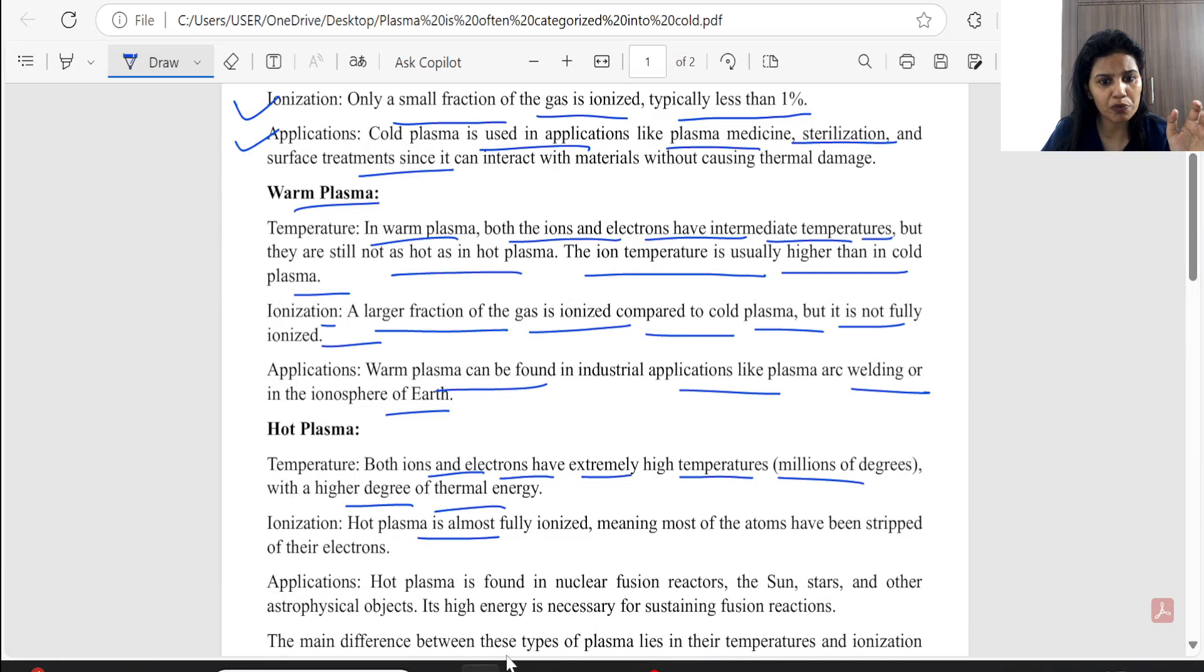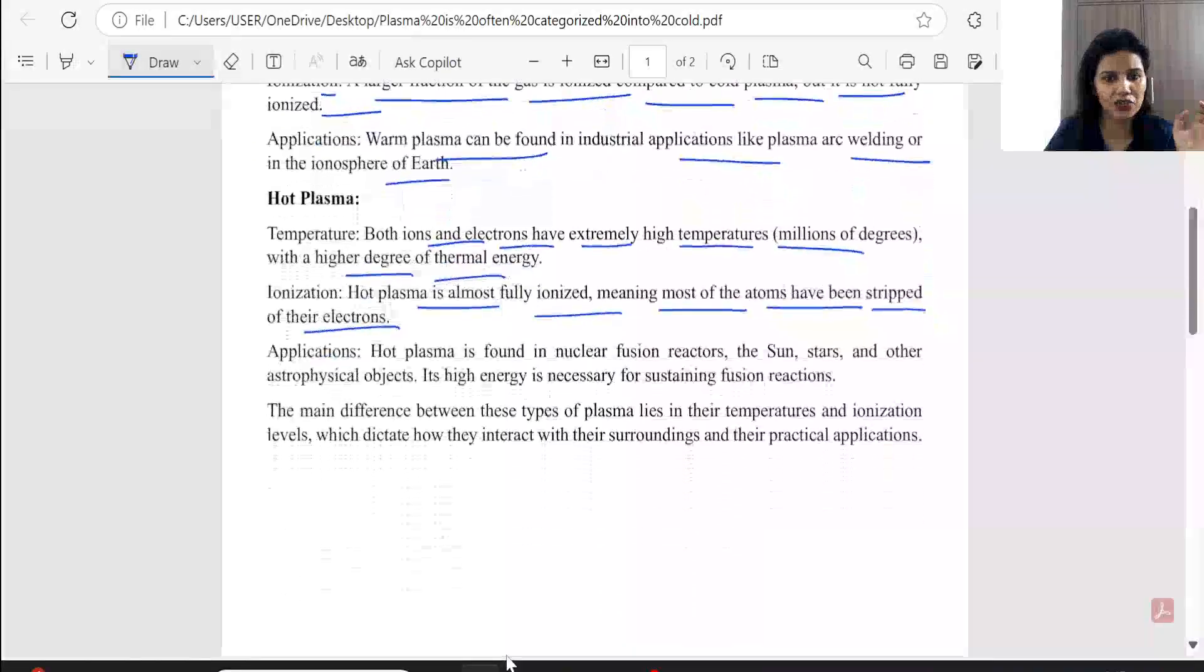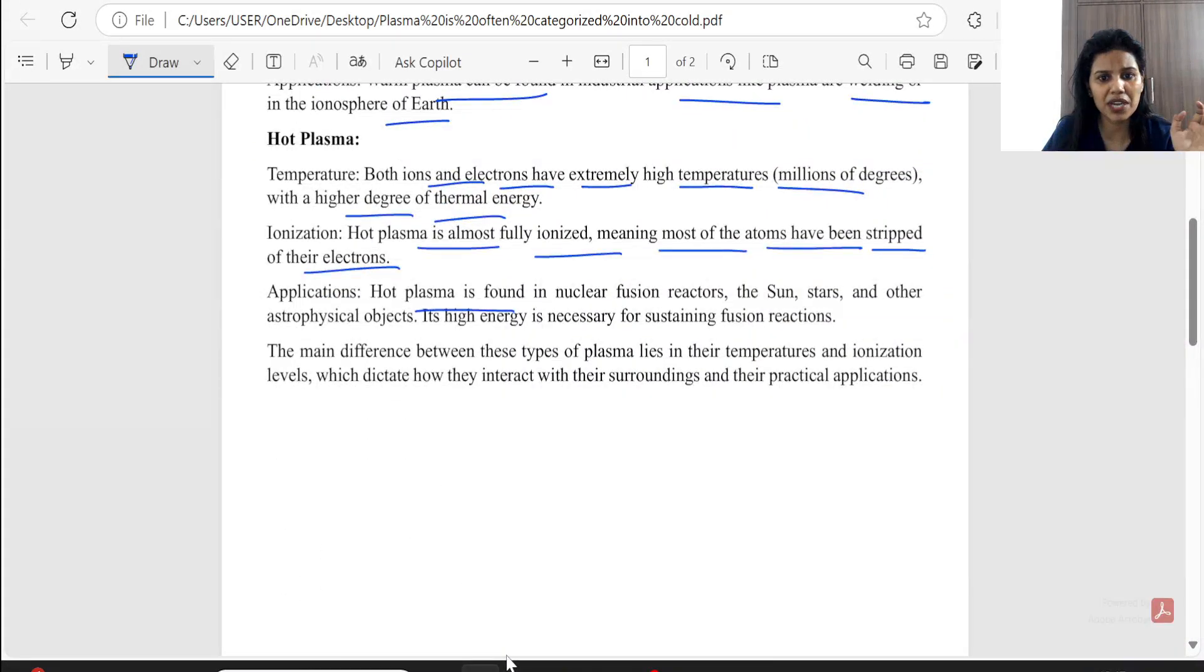With a higher degree of thermal energy, ionization, hot plasma is almost fully ionized, meaning most of atoms have been stripped of their electrons. That means all atoms in the electrons have disappeared. In applications, you have nuclear fusion reactors, sun, stars, astrophysical, ionization.